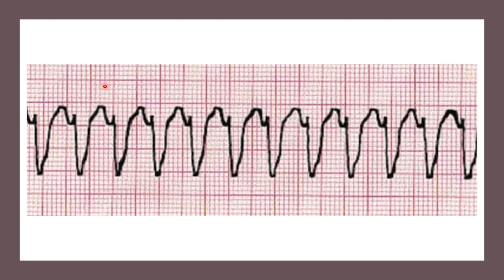This is VTAC. One thing to note is this can be VTAC with or without a pulse. Depending on the patient's presentation, if they have a pulse with a VTAC rhythm, we may want to consider an antidysrhythmic drug or synchronized cardioversion — you always want to synchronize before you cardiovert. If they don't have a pulse, we start CPR. This is one of our shockable rhythms; we can administer epinephrine and defibrillate at 360 joules or 200 joules depending on monophasic or biphasic, per your protocols. It's very important to distinguish whether the patient has a pulse or not.